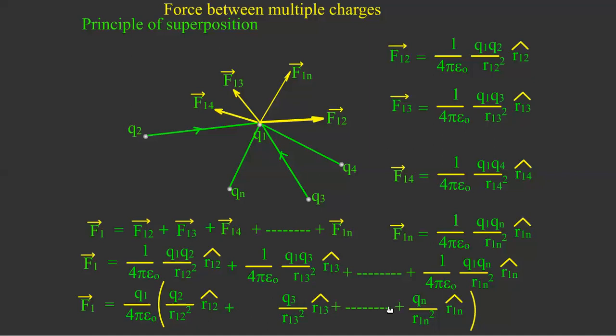Therefore, this can be represented by the summation symbol. F1 equals Q1 divided by 4 pi epsilon 0, times the summation from i equals 2. Look here, from i equals 2 up to N.